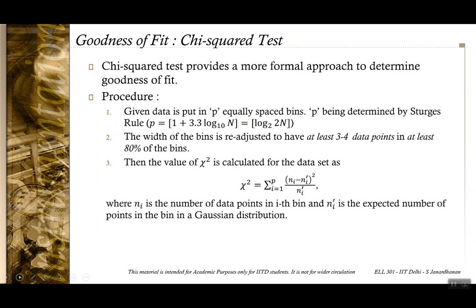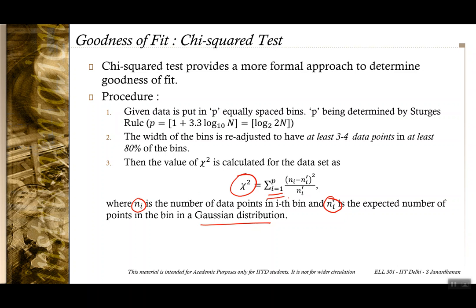The next step is to calculate chi-square from the data. The chi-square value is computed from the deviation between the expected number of points in a particular bin if the distribution were Gaussian, Ni-prime, and the actual number of points in that bin, Ni. The formula sums (Ni minus Ni-prime) squared divided by Ni-prime over all bins. We compare this value to the chi-square table and draw a conclusion.